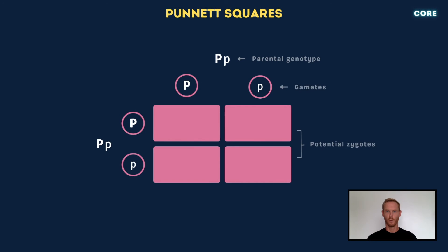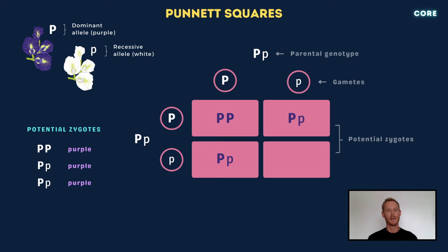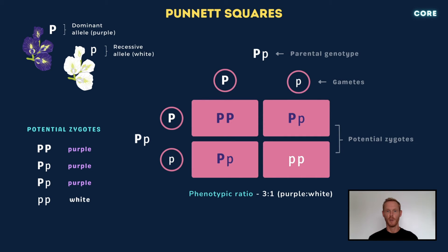A Punnett square is a useful tool for working out and displaying the outcomes of a genetic cross. The two boxes along the top are labelled with the genotypes of the gametes of one parent, and the boxes down the left-hand side with the genotypes of the gametes of the other parent. Considering the inheritance of flower colour in pea plants, where the dominant allele produces purple flowers and the recessive allele produces white flowers: when two heterozygous purple-flowered plants are crossed, the possible combinations are PP, two times Pp, and pp, giving a phenotypic ratio of 3:1 for purple to white flowers.